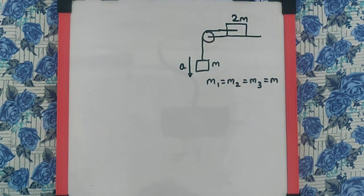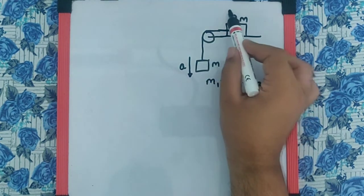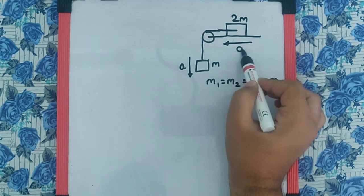We would not need to deal individually with them, and since both are connected by a common string, the acceleration of both will be the same. So this body will also move with acceleration A.